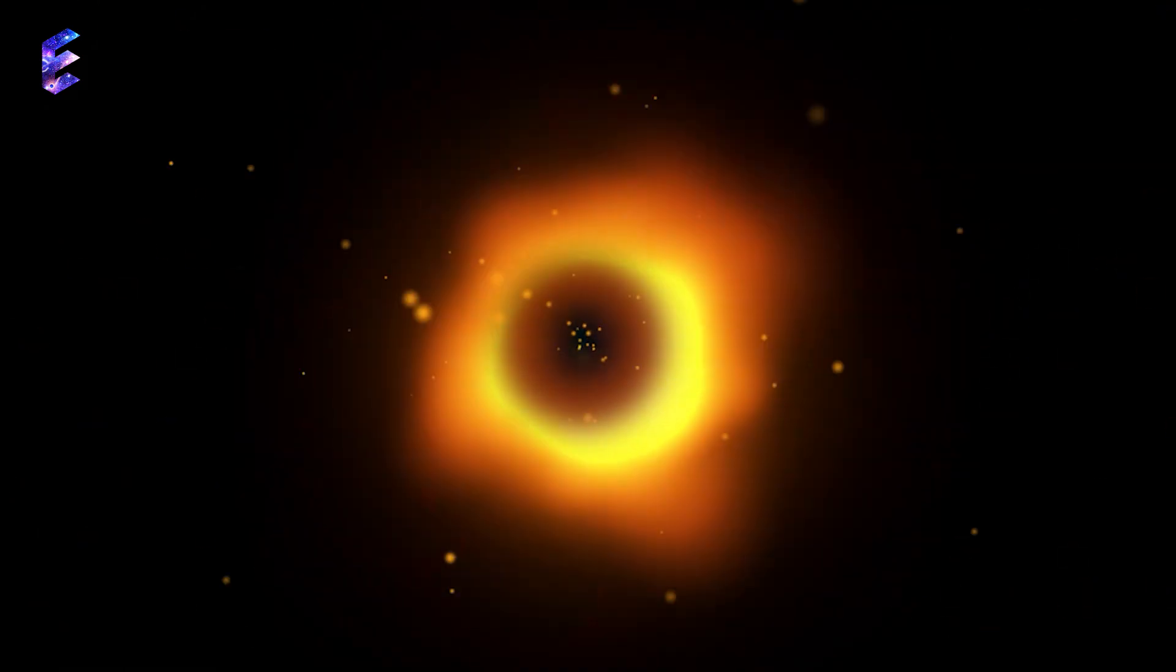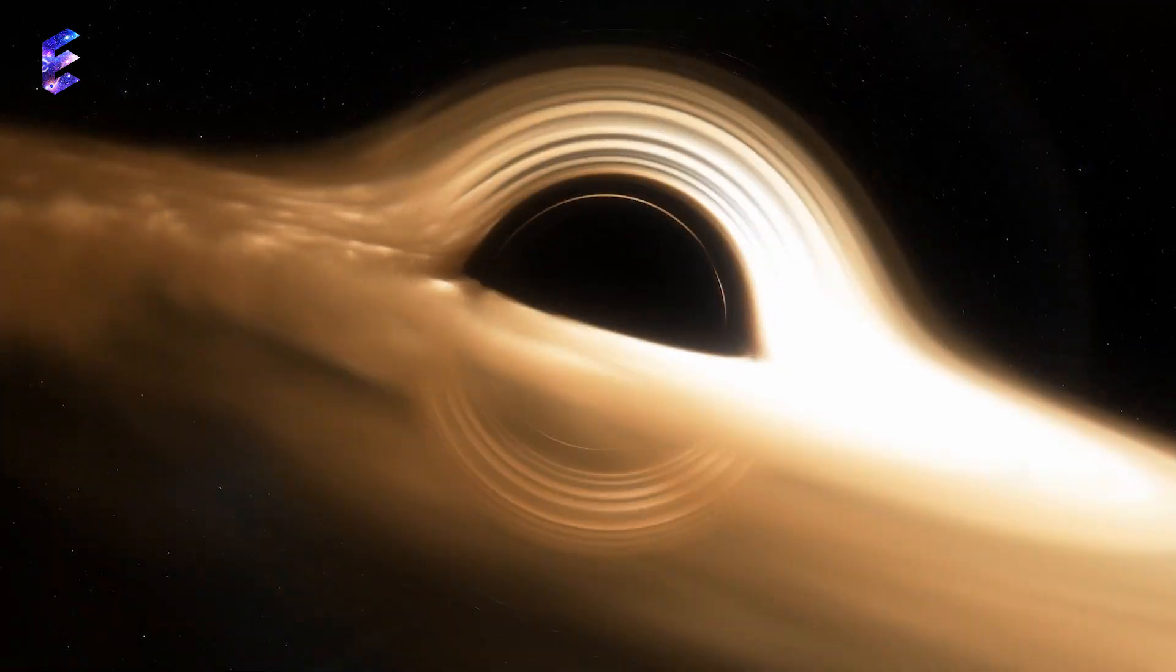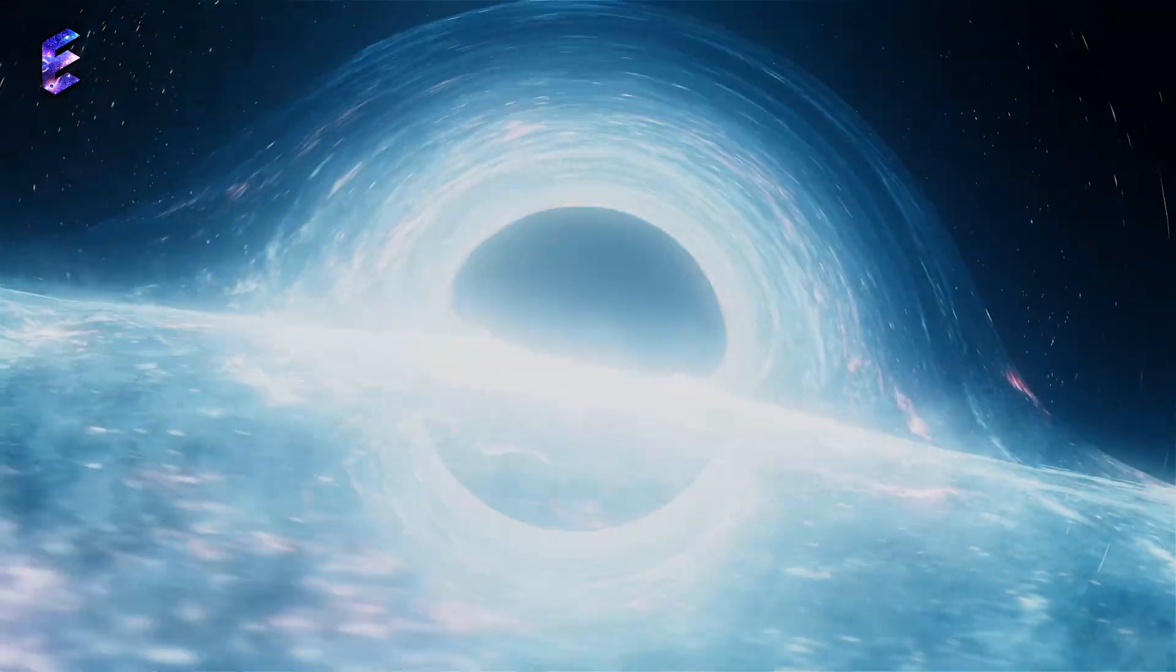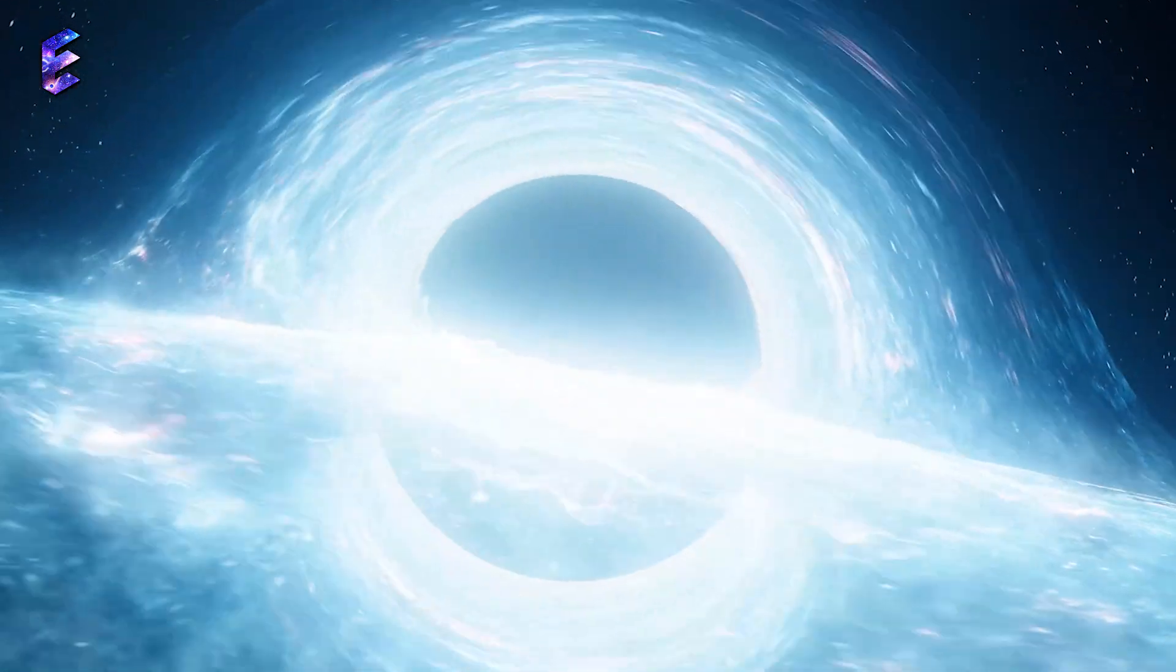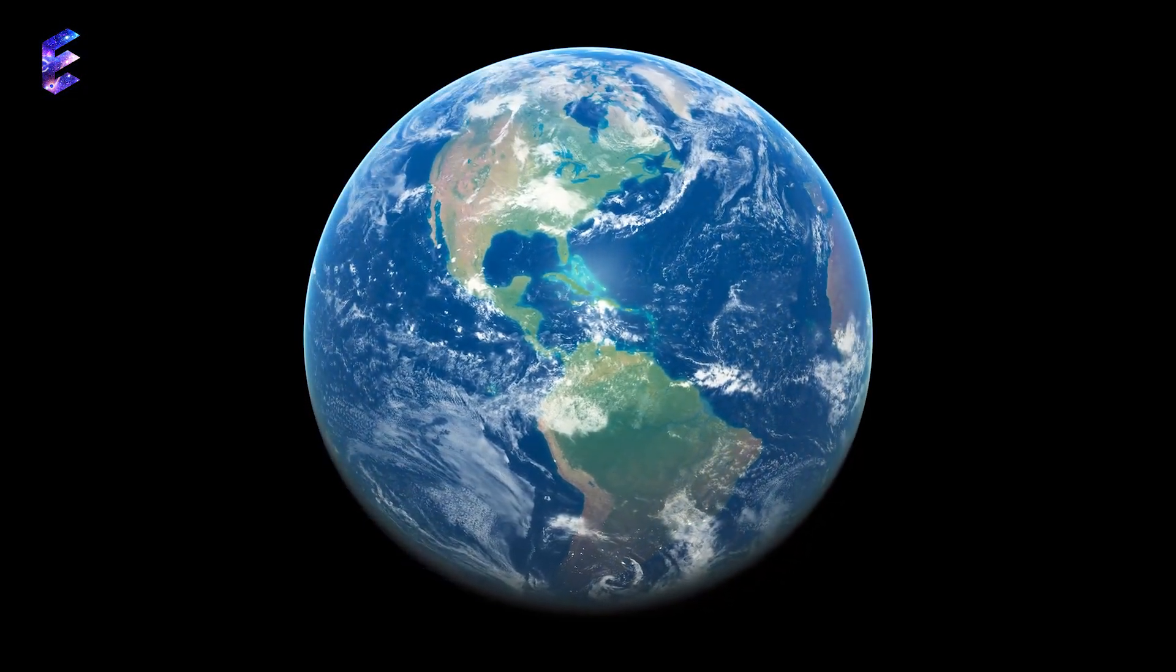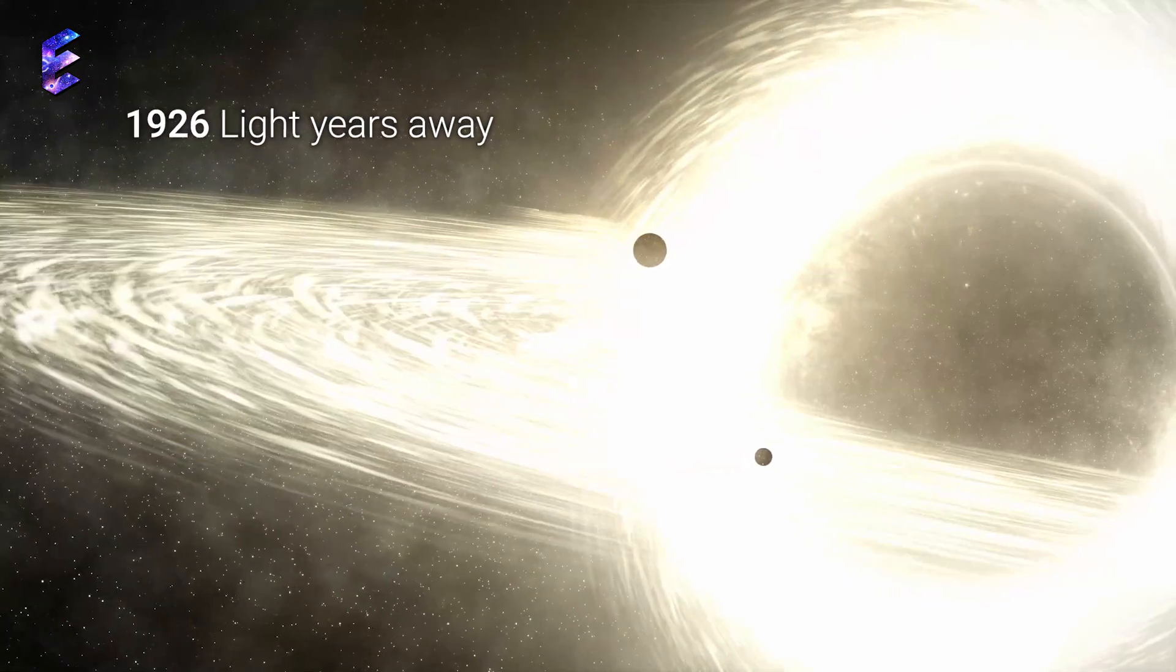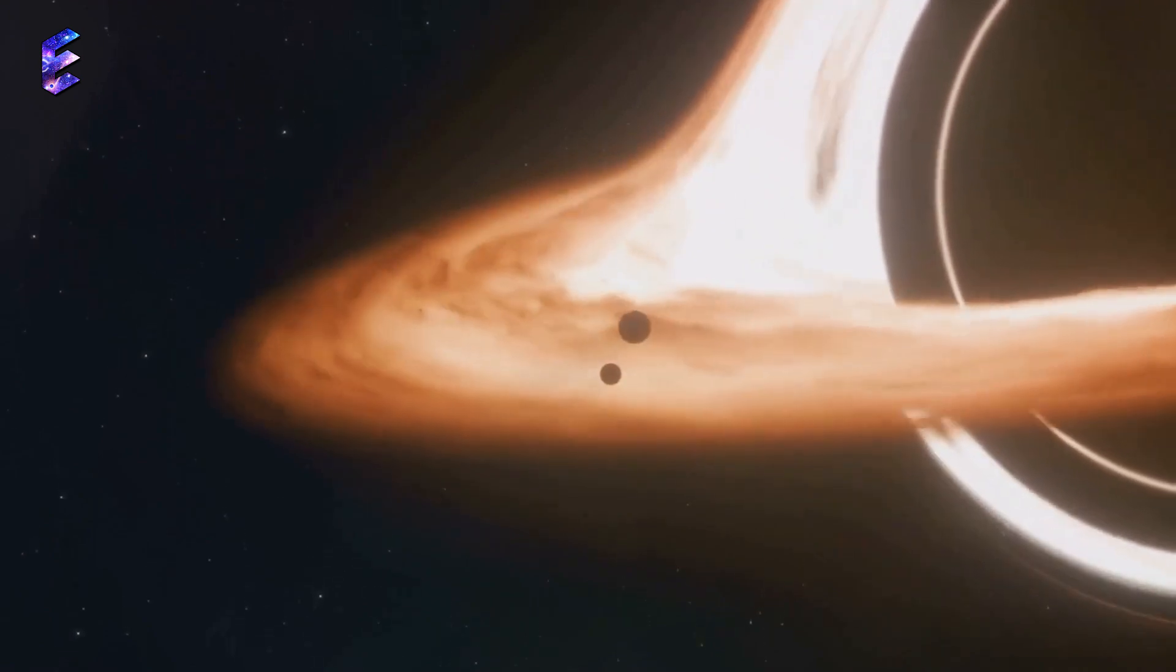Now, imagine this black hole not as a mere speck in the distant heavens, but as a titanic entity. Weighing a whopping 33 times the mass of the Sun, it is the most massive stellar mass black hole of our Milky Way. But what makes this gigantic abyss more interesting for us is its proximity to our home planet. It is a mere 1926 light-years away from us.